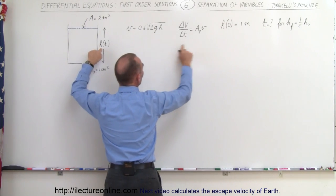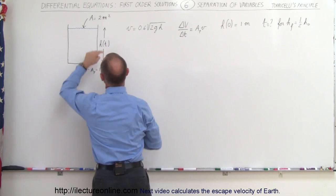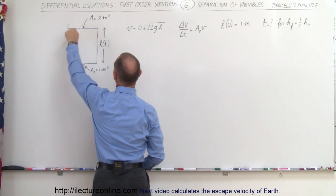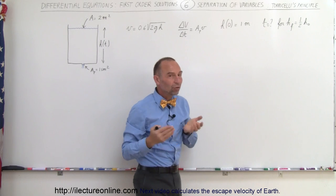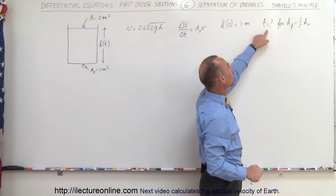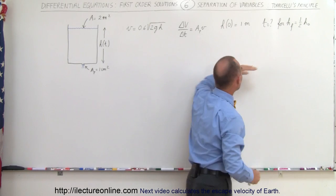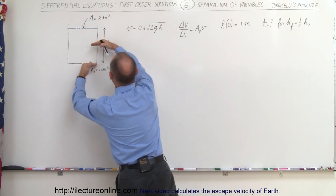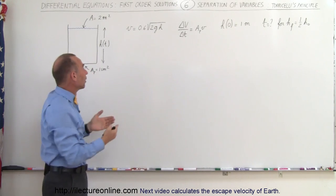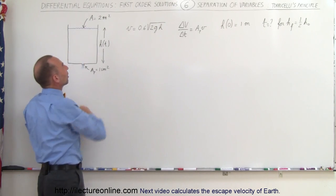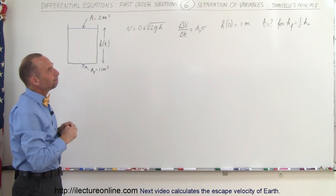There's an initial condition where the height at time equals zero. Remember, height is a function of time. So when time is equal to zero, the height is equal to one meter. The cross-sectional area of the barrel is two meters and it's constant. And finally, we're supposed to find how long it will take for the final height of the water in the barrel to go down to half the original height — so how long will it take for half the water to leave the barrel through that little hole.